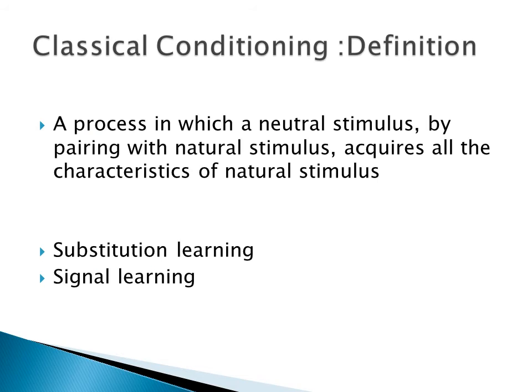Now we can define classical conditioning: it is a process in which a neutral stimulus, by pairing with a natural stimulus, acquires all the characteristics of the natural stimulus. That is, the bell on pairing with the natural stimulus — food — acquires all the characteristics of the natural stimulus and is itself able to evoke all the responses which the natural stimulus usually does. Classical conditioning is also called substitution learning, because we substitute a neutral stimulus in place of the natural stimulus for conditioning. It is often referred to as signal learning, as the conditioned stimulus acts as a signal for the unconditioned response.